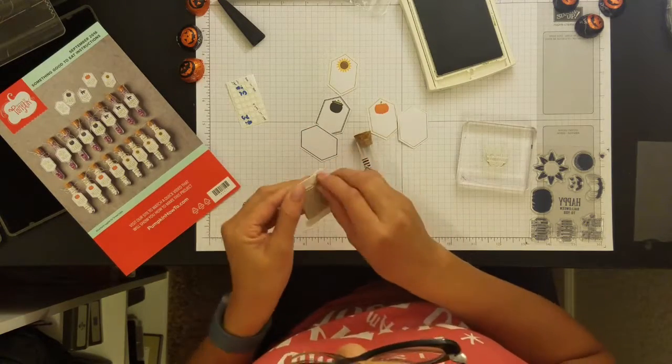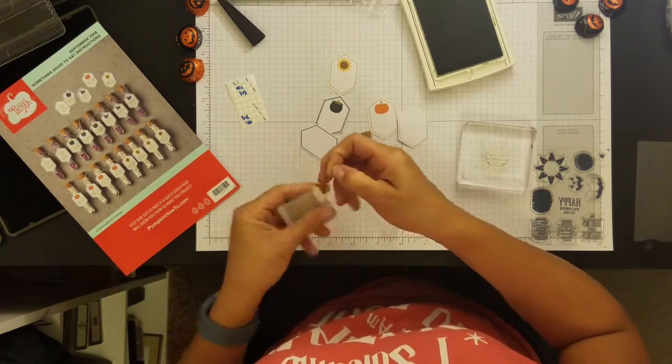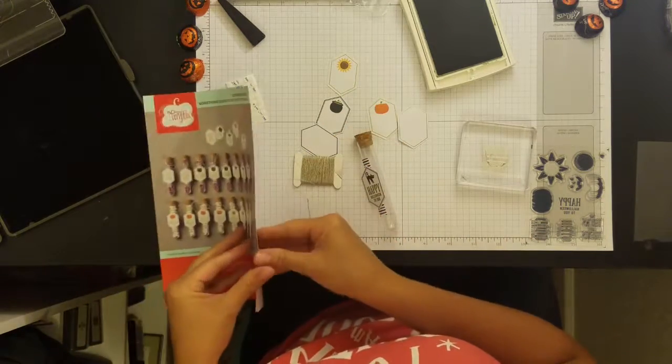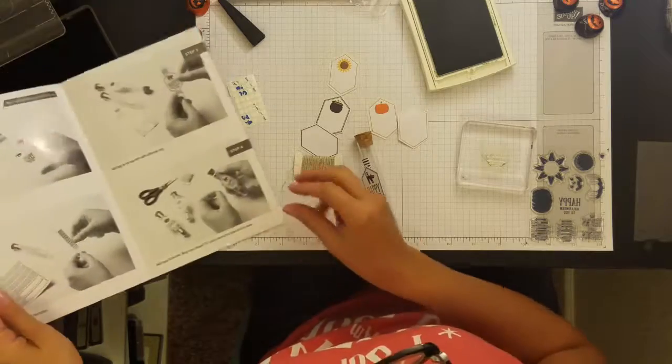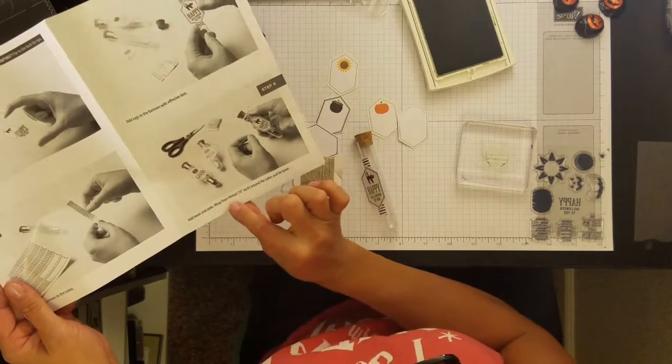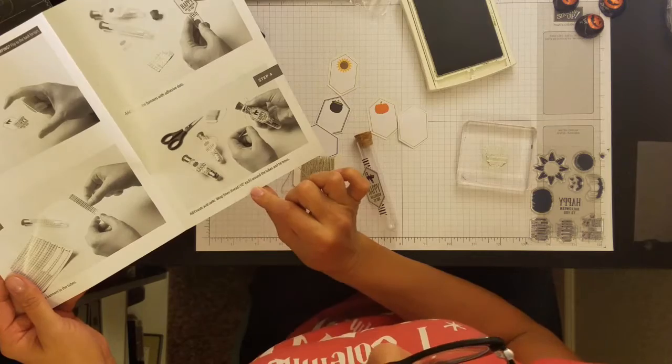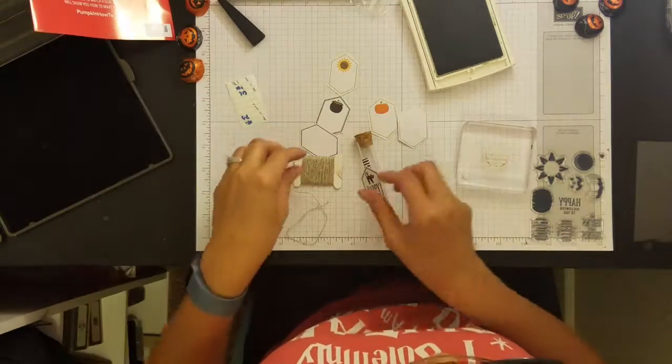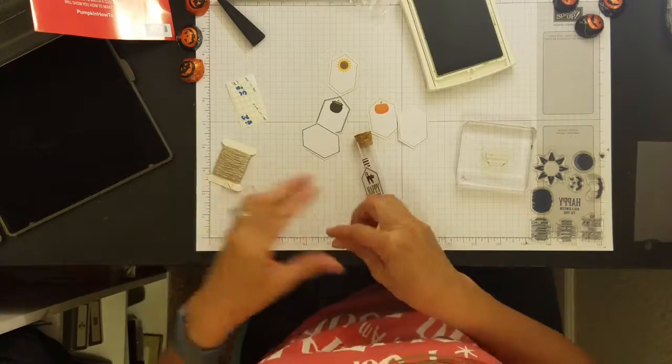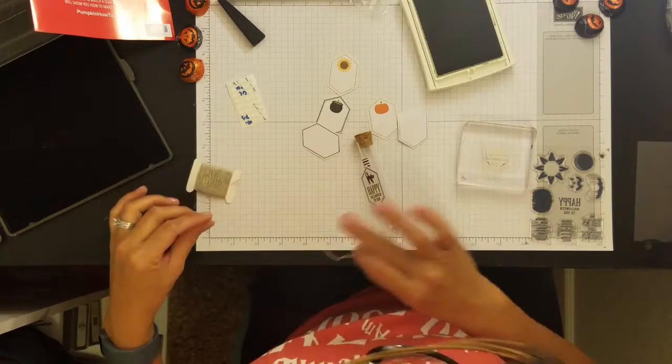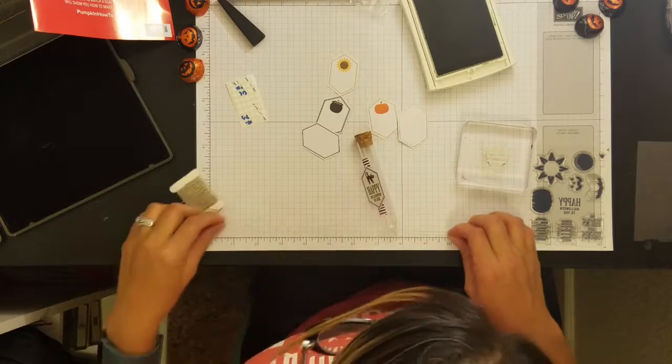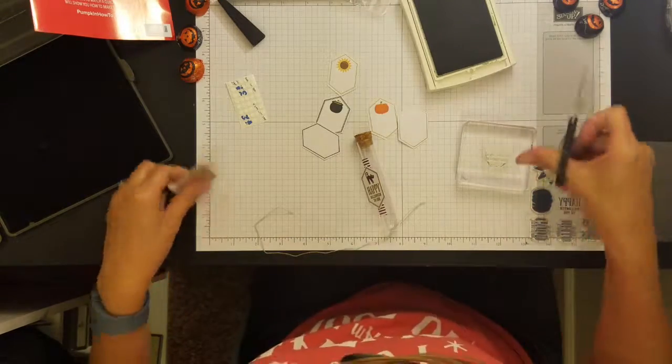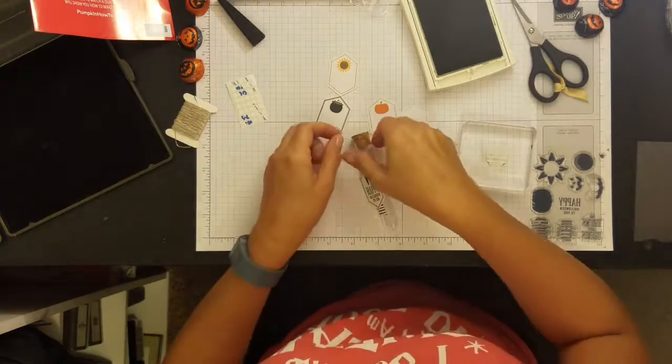And then, get out this cute little twine. And sometimes it'll tell you to cut, like, eight inches or six inches. This one says, wrap linen thread ten inches each around the tube. So, if it tells you ten inches, they give you enough to do all of your tubes. So, you don't have to worry about running out. If they say use ten inches, use ten inches because there's plenty on the roll.